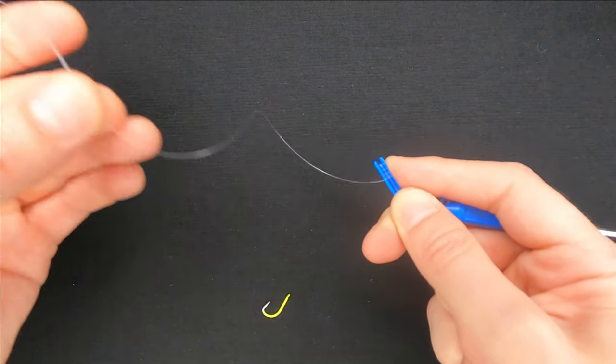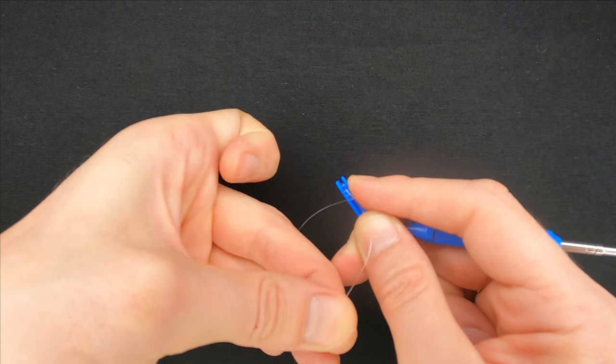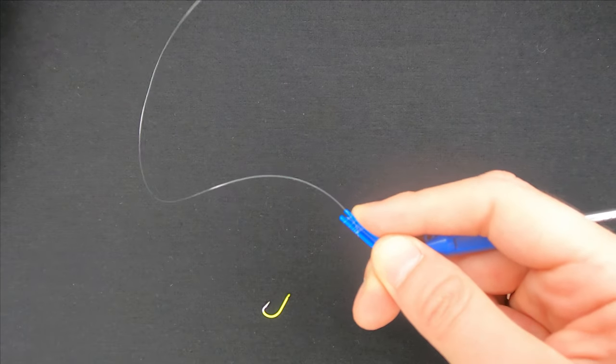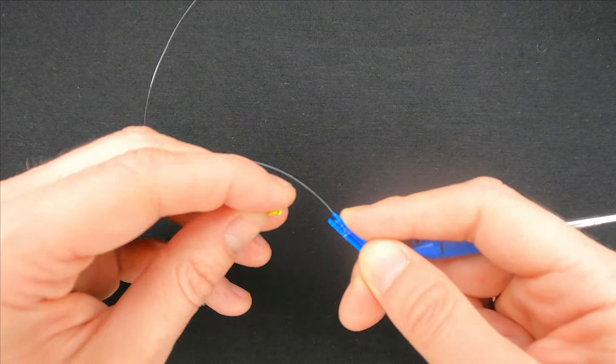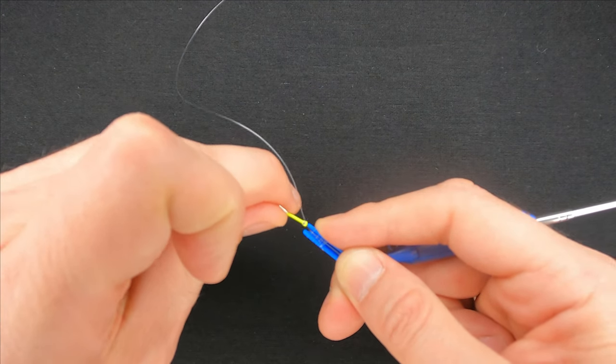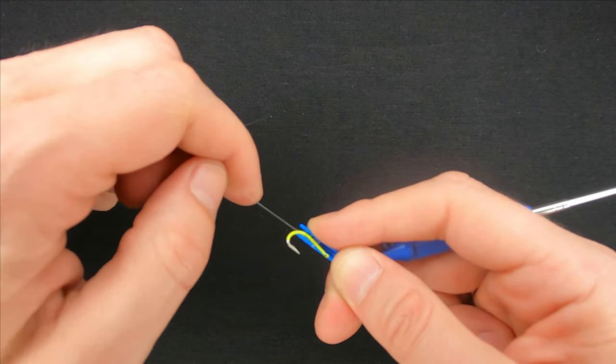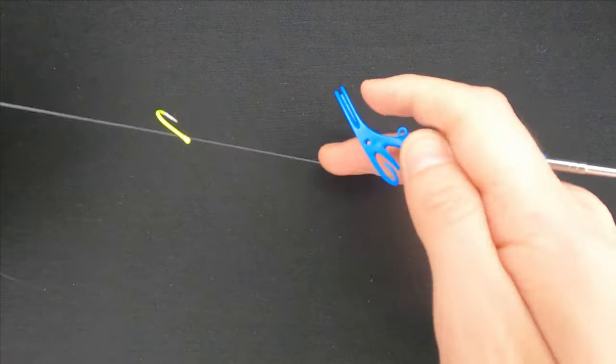The tag end goes through the middle of the wraps that you've just done from the back to the front. Put the hook between the wraps and simply pull the tag end so that it would slip from the tool onto the hook.